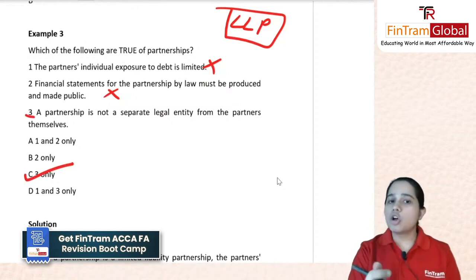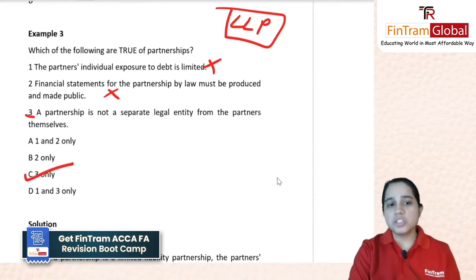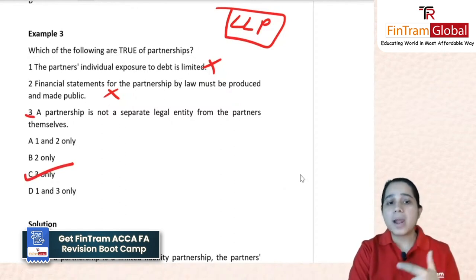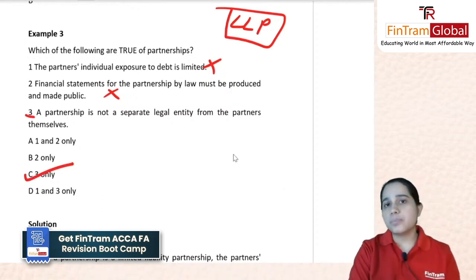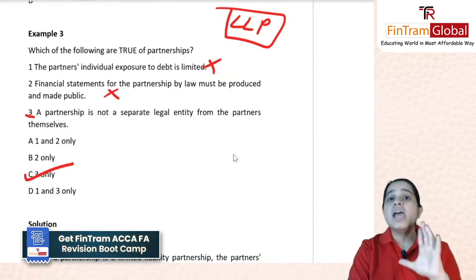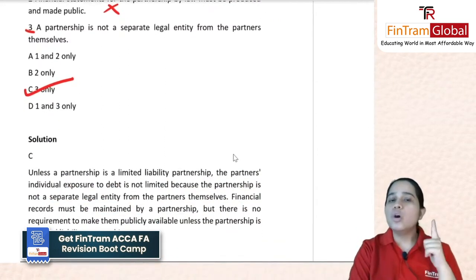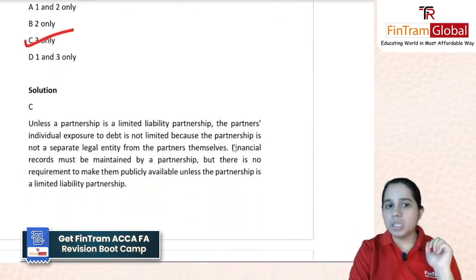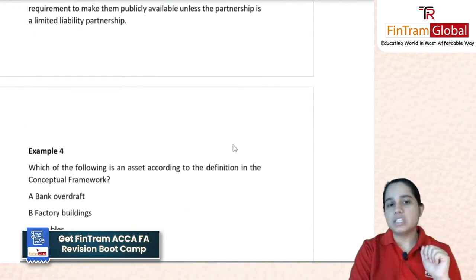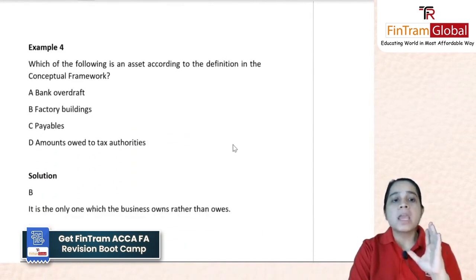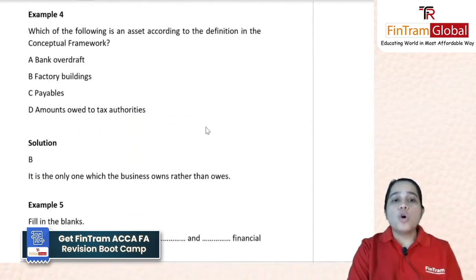Example 3: which of the following are true of a partnership? Option one: the partners' individual exposure to debt is limited — no, because there is no separate legal identity unless registered as an LLP. Option two: financial statements for the partnership must by law be produced and made public — no, a partnership is not a separate legal entity from the partners. Option three is the only correct option, so the answer is C — third only. This confirms that sole traders and partnerships are not separate legal entities, but a partnership becomes one when registered as an LLP.